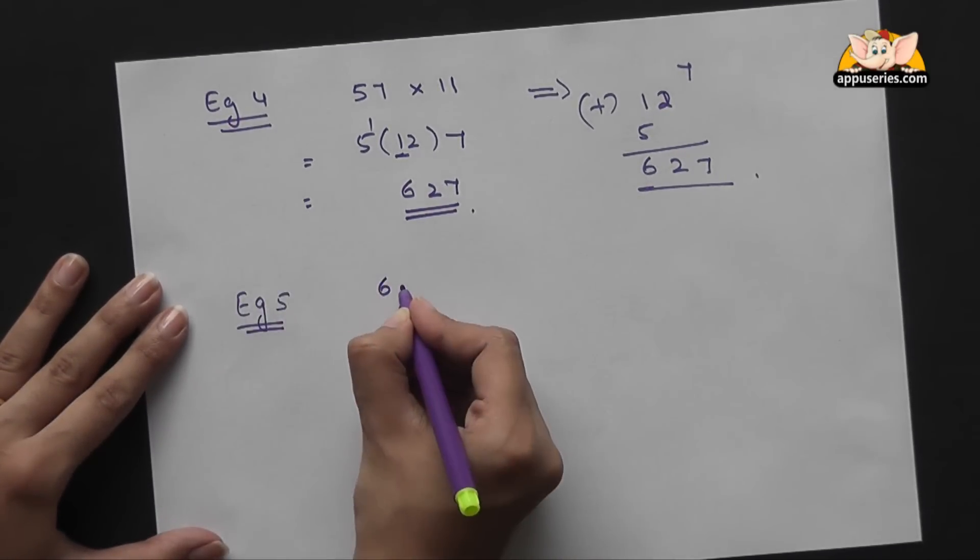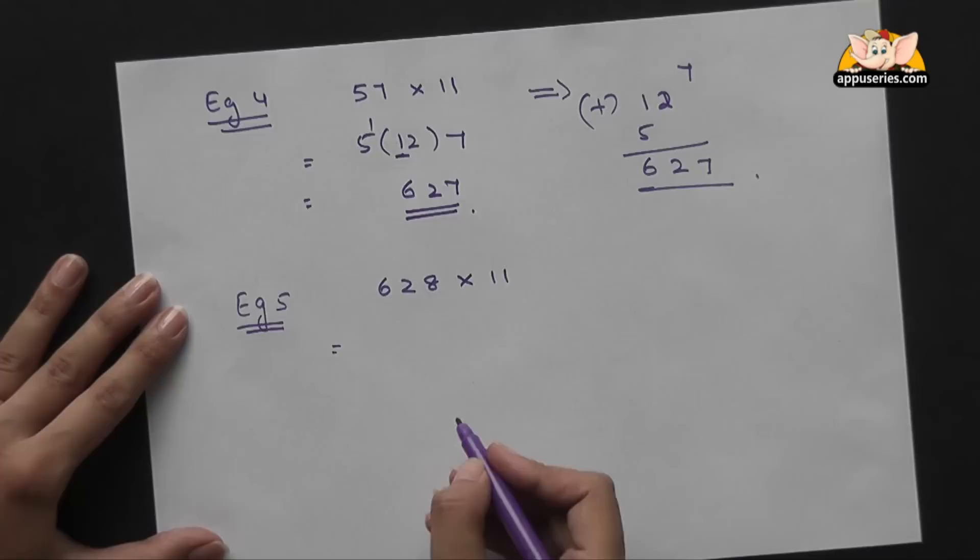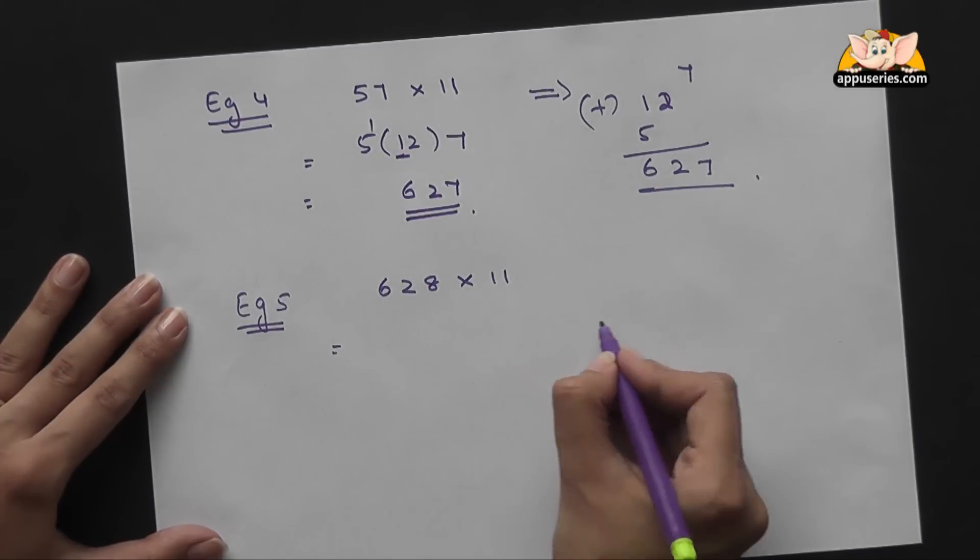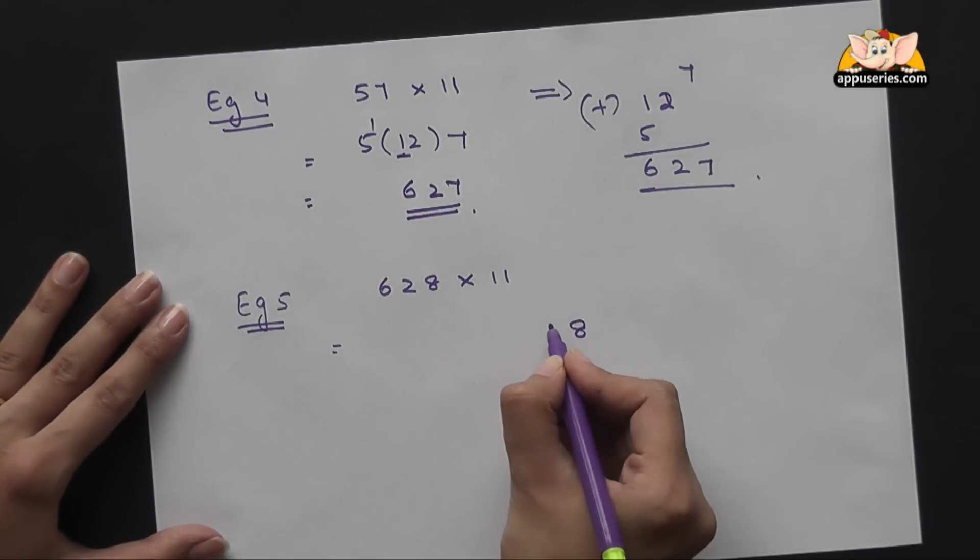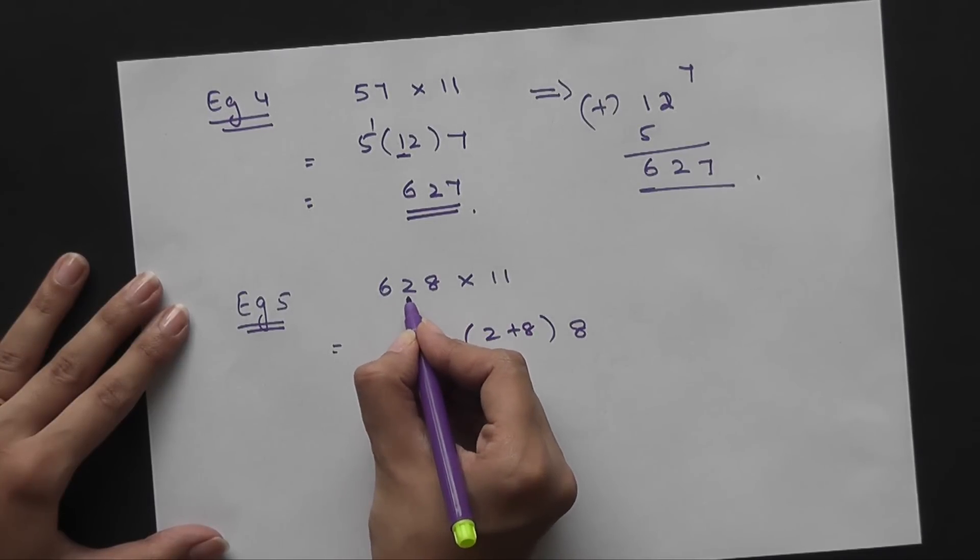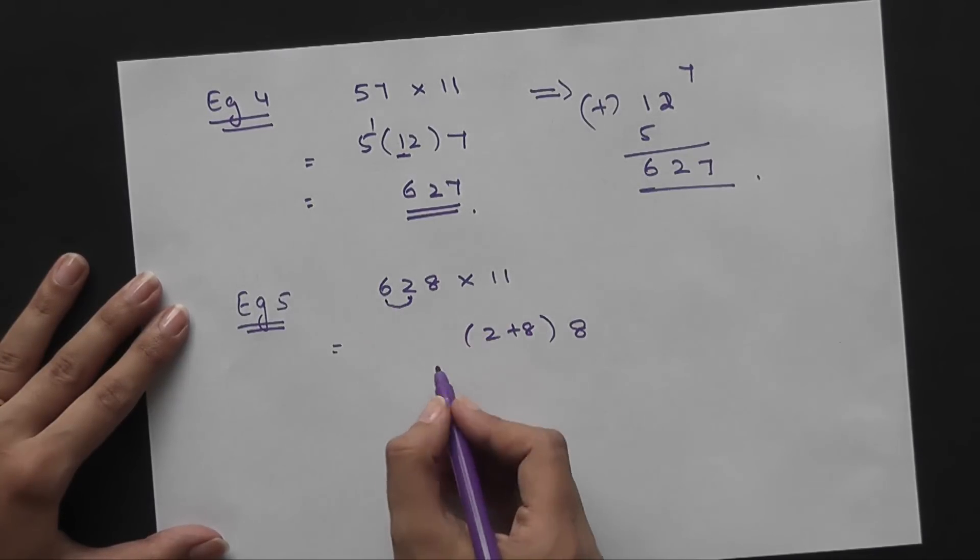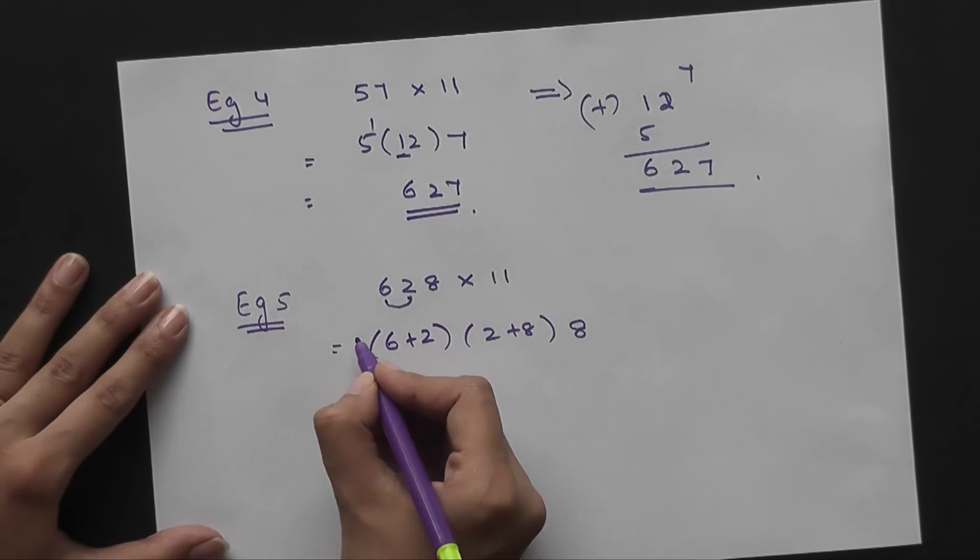Say 628 into 11. So we'll break it down first from the left: 8, 8 plus 2. Next you have to add 2 to the number to its left, so you get 6 plus 2, and then we bring down the 6.